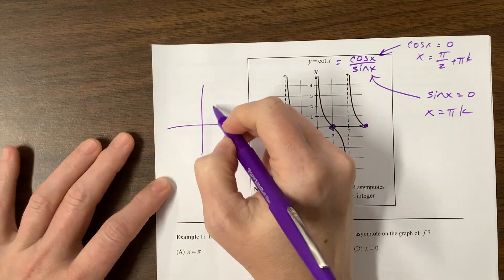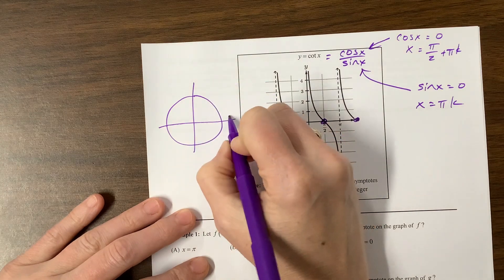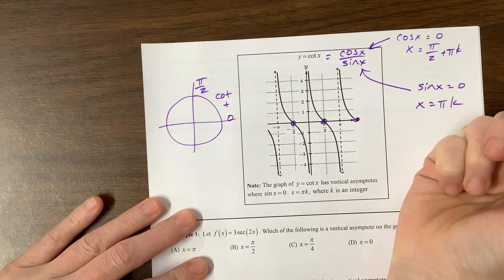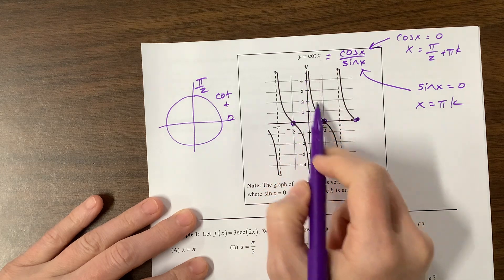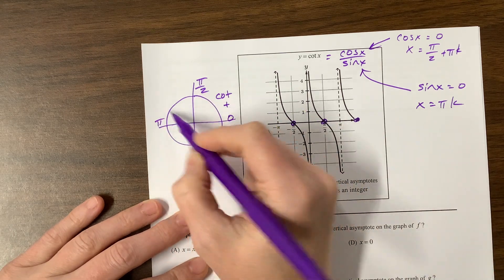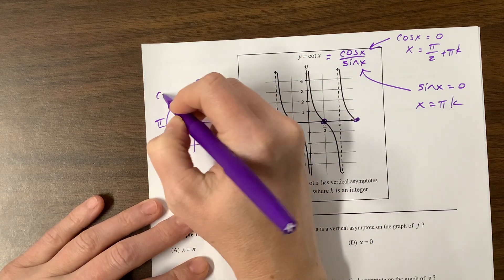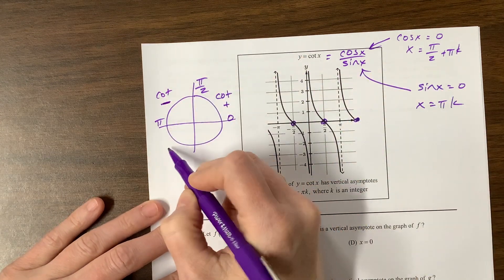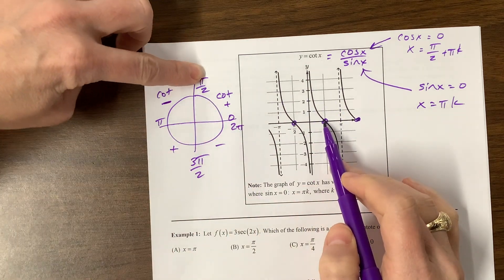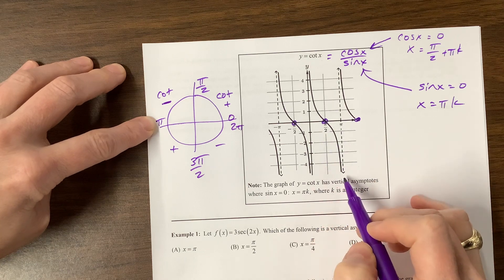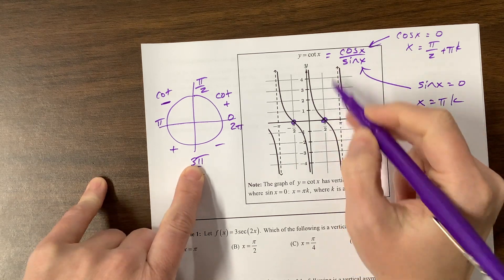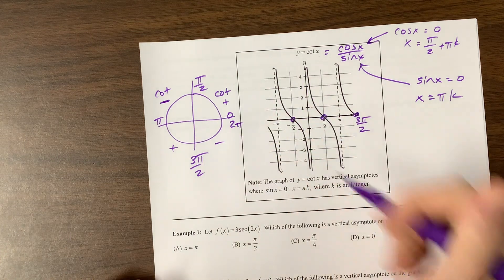It's going to have asymptotes when sine of x is equal to zero, which happens when x is equal to pi k. The way that I like to remember what happens is that I like to think unit circle. In quadrant one, we're going from zero to pi over two, both tangent and cotangent will be positive in that quadrant. From zero to pi over two, we're only going to have positive values here. When we go into quadrant two, from pi over two to pi, these tangent values are negative, the reciprocal of a negative is still a negative. So cotangent here is going to be negative. Then we're positive and then we're negative over here.